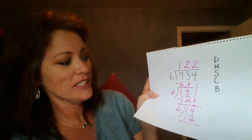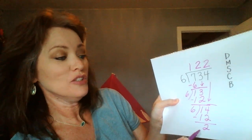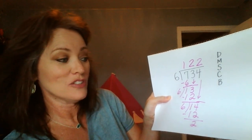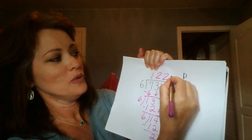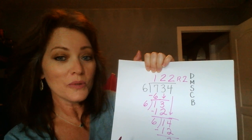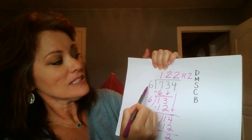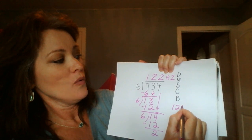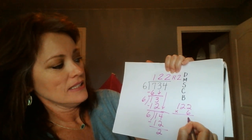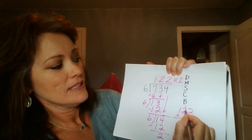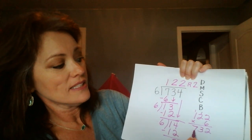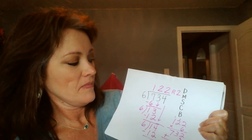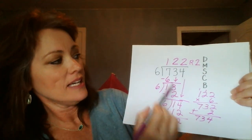14 minus 12 is 2. Nothing to bring down. 2 is less than 6, so that means 2 is our remainder. We put an R and a 2. 734 divided by 6 is 122 with a remainder of 2. Check your work: multiply 122 times 6.